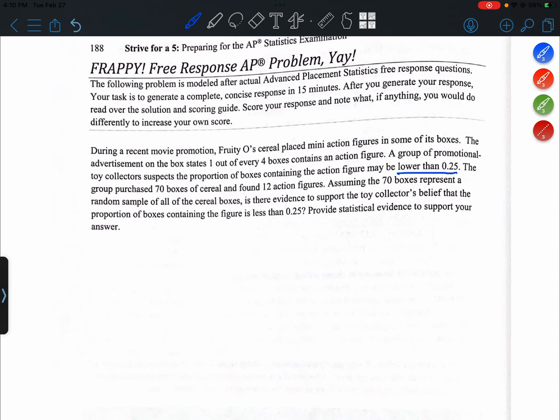The group purchased 70 boxes of cereal and found 12 action figures. Assuming the 70 boxes represent a random sample of all the cereal boxes, is there evidence to support the toy collector's belief that the proportion of boxes containing the figure is less than 0.25? Provide statistical evidence to support your answer.